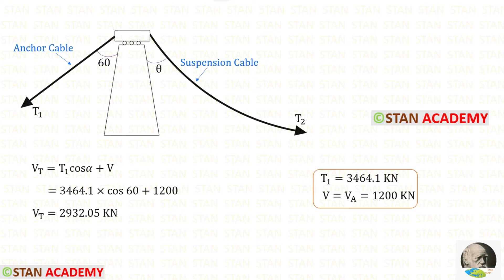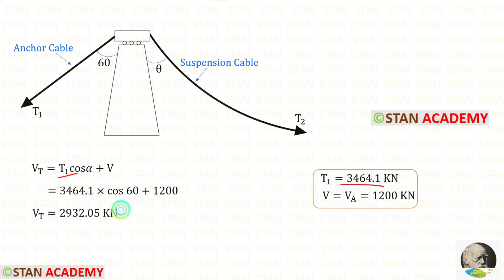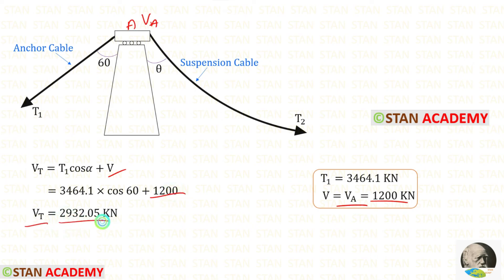Now let us find the vertical force at the top of the tower, Vt. Using the formula derived in the previous video, and applying T1 and the vertical component at A, which is VA = 1200 kilonewtons, we can calculate Vt.